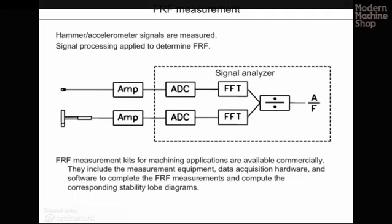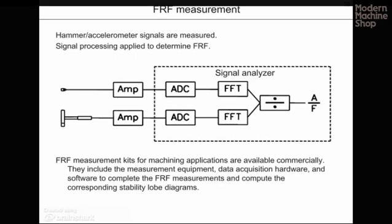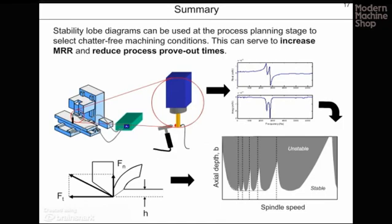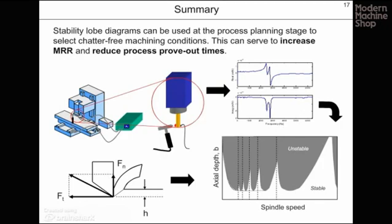Frequency response function measurement kits that include the required hardware and software are available commercially. To summarize, stability lobe diagrams can be used at the process planning stage to select chatter-free machining conditions. The requirements are the tool point frequency response function and the cutting force model through cutting force coefficients. Given this information and the stability lobe diagram, you can increase material removal rates and reduce the process prove-out times for new machining operations.